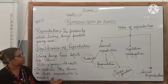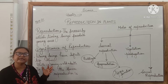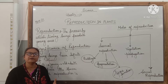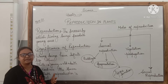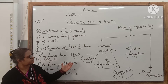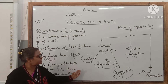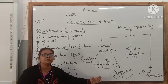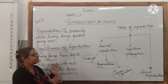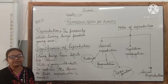Now, the types of asexual reproduction — as already mentioned, it occurs in lower plants like algae and fungi. The three types are: budding, fragmentation, and spore formation. These are the three categories into which we can divide asexual reproduction.